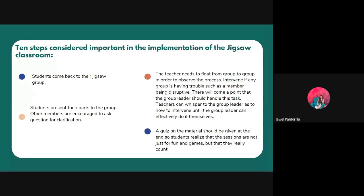The teacher needs to float from group to group in order to observe the process. If any group is having trouble, such as a member being disruptive, the group leader should handle this task. Teachers can whisper to the group leader on how to intervene until the group leader can effectively do it themselves.